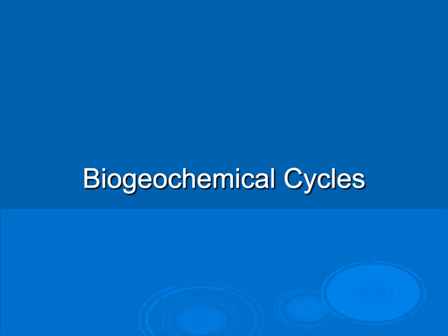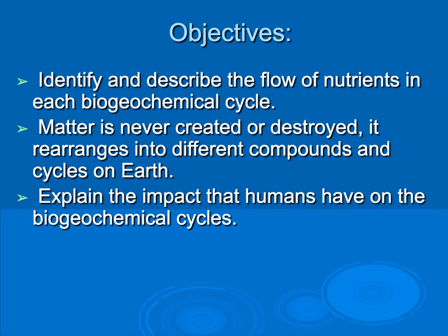I'm going to go over the biogeochemical cycles on our Earth. For reference, this would be found in Chapter 3, Section 4. Some of the objectives you should take away from this screencast is that you should be able to identify and describe the flow of nutrients in each of the biogeochemical cycles. Example questions might ask where a particular element goes at one point in the cycle, or how it travels from one place to the next.